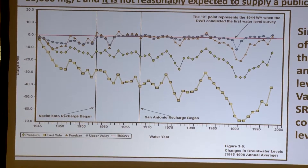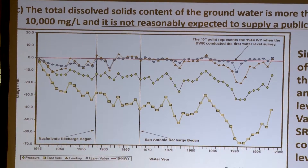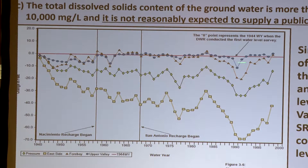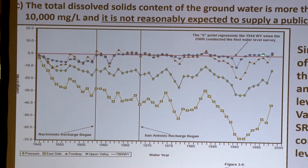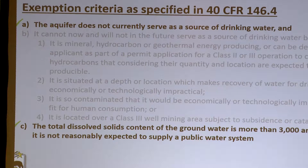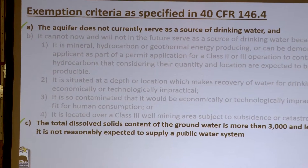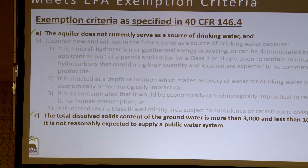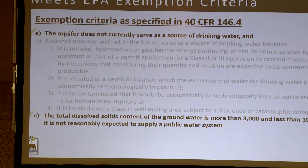When we look at the water levels in the upper valley sub-region of the Salinas River, we see they've pretty much stayed the same since 1944. This blue line at the top of the graph shows water levels in the upper valley sub-area — pretty much flat-lined. Based on the available data and the groundwater regime, the state is comfortable saying that not only do the Lombardia and the Aranac not currently serve as a source of drinking water, but it seems clear that the dissolved solids content is greater than 3,000 and less than 10,000, and it is not reasonably expected to supply a public water system.